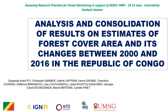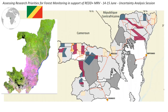We are pleased to share research results from a collaboration between the University of Marenguabi, the Geographical Institute of France, and SEERS. This research has been published in an article entitled 'Analysis and Consolidation of Results on Estimators of Forest Cover Area and its Change Between 2000 and 2016 in the Republic of Congo.' The Republic of Congo is a predominantly forested country with nearly 65% of the national territory covered by forest, but several activities contribute to its degradation.